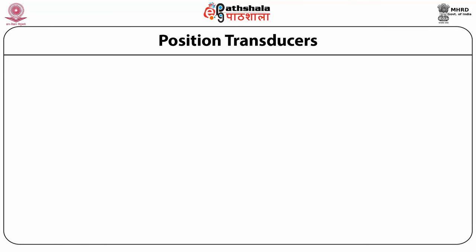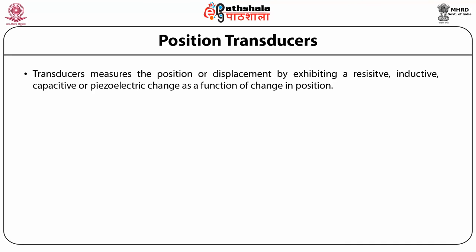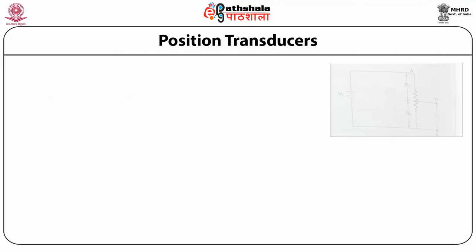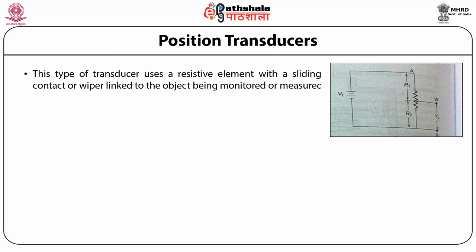Let us now discuss a type of transducer — the position transducer. Transducers measure position or displacement by exhibiting a resistive, inductive, capacitive or piezoelectric change as a function of the change in position. For the resistive position transducer, the change in position can be monitored by measuring the change in resistance of the sensing element. This type of transducer uses a resistive element with a sliding contact or wiper linked to the object being monitored or measured.